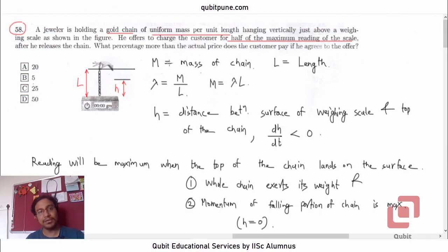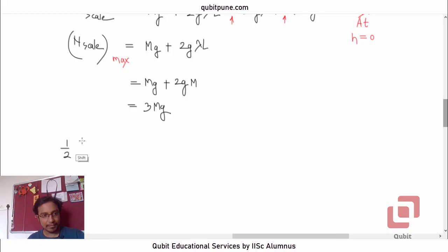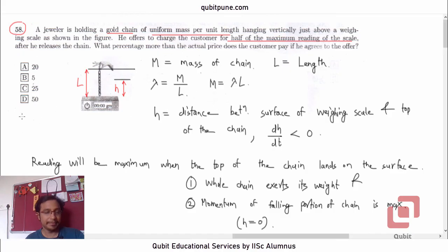Now, let us come back to the problem. They say he offers to charge the customer for half of the maximum reading of the scale. What is half of N_scale_max? It is 1.5 times mg. How much will the customer be paying? He should have been paying only for mg. What is the excess? Excess payment will be 1.5 minus 1 upon 1. That is 0.5 or 50 percent. And that is option D for question number 58.